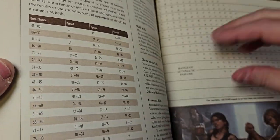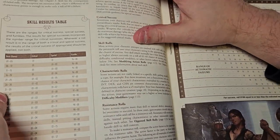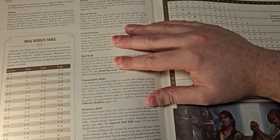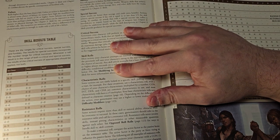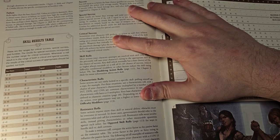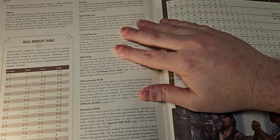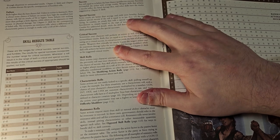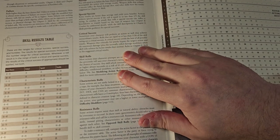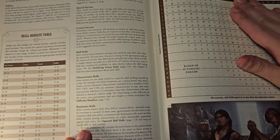Here are the levels of success in the base version of BRP: a success is any roll equal to or below the base chance, special success is one-fifth, and critical success is one-twentieth.